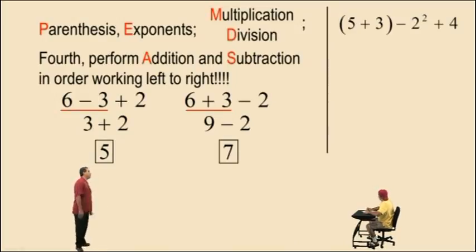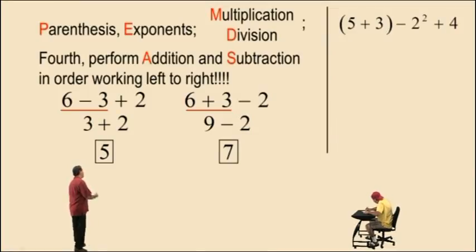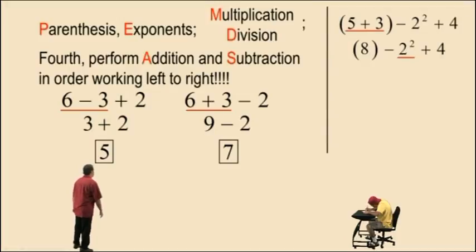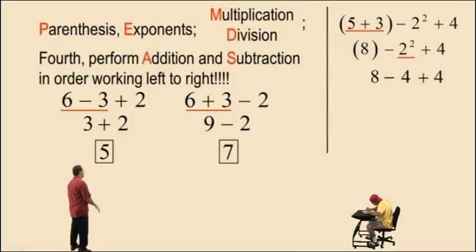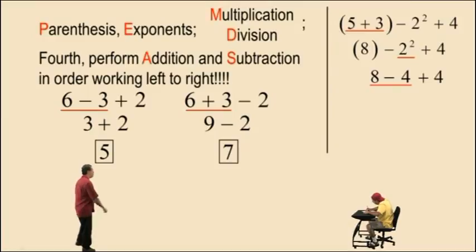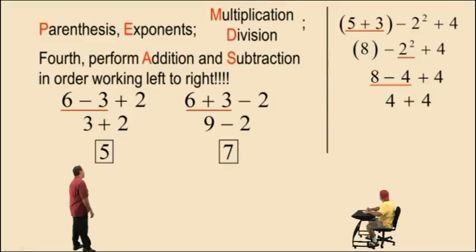Now up here we have parentheses, a subtraction, an addition, and an exponent. So we have to perform the parentheses first. 5 plus 3 gives us 8. Bring down our work. Now we have to perform the exponent. That comes next. 2 squared is 2 times 2, that's 4. Bring down our work. Notice we don't require those parentheses around the 8. Now we have subtraction and addition. Remember we have to work left to right, whichever comes first. Since the subtraction comes first, we perform that operation first. That's 8 subtract 4. 4 plus 4. And our answer is 8.